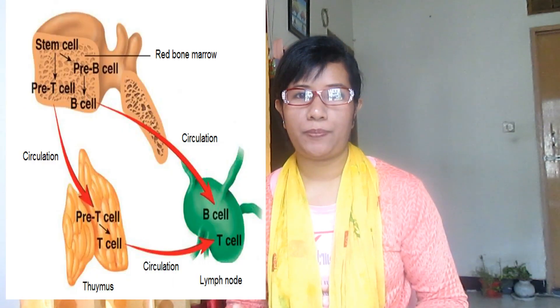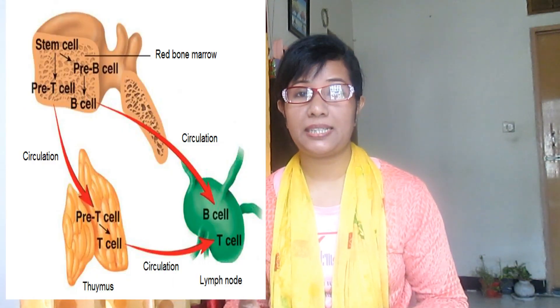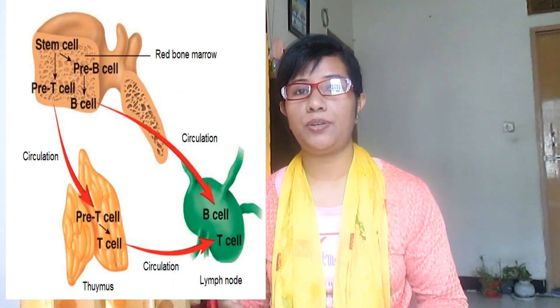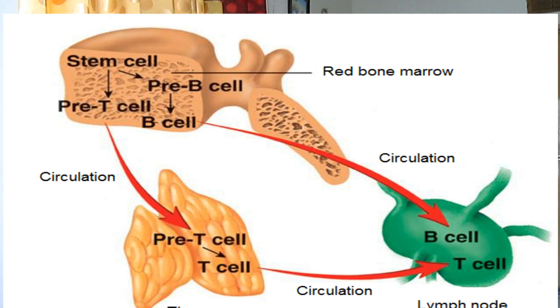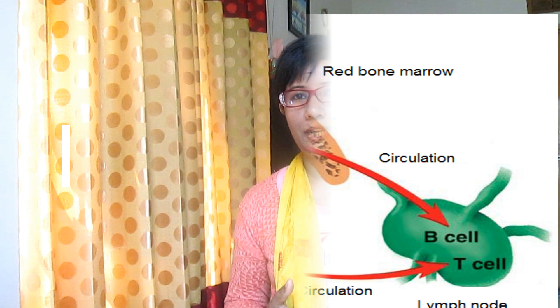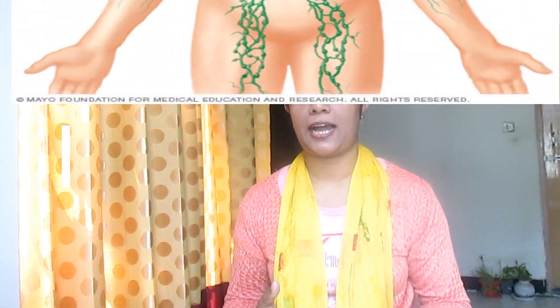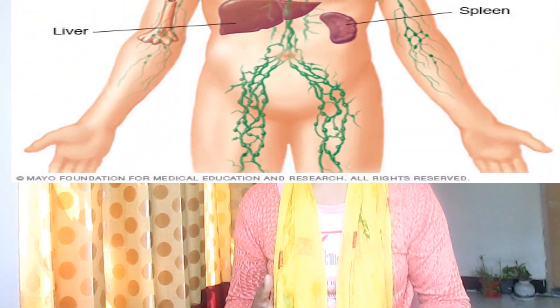We will look in detail at the roles of B and T cells and how they interact in the following videos. Briefly, however, some T cells coordinate the immune response, stimulating B cells to divide when mature. All these B and T cells circulate between the blood and the lymph.